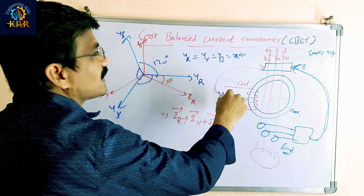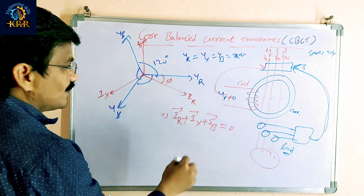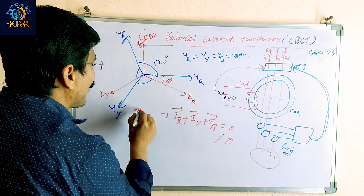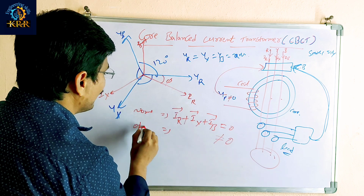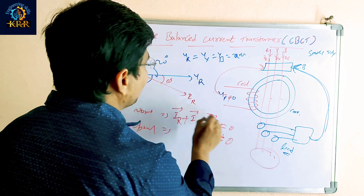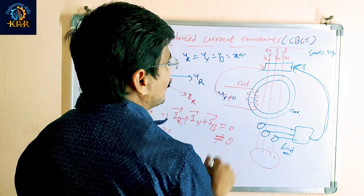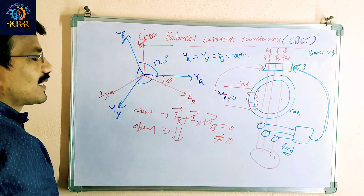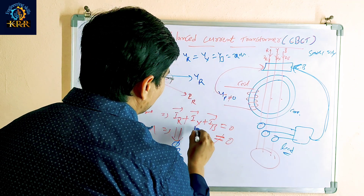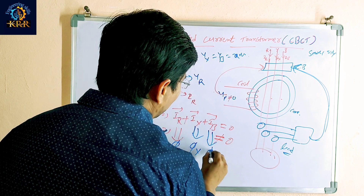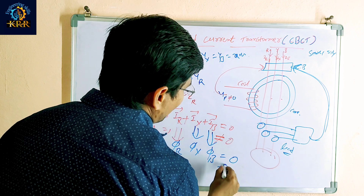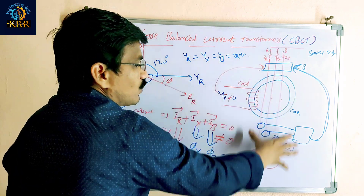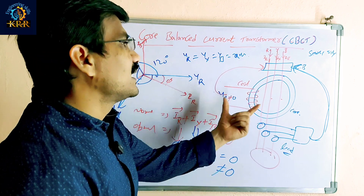In normal operation, the vector sum of all currents is zero, so there is no voltage across the coil and no command is given to the circuit breaker — no tripping. Each phase IR, IY, IB generates a corresponding flux: R-flux, Y-flux, B-flux. The resultant flux is also zero in normal operation, meaning no voltage is generated across the coil and the circuit breaker receives no command.